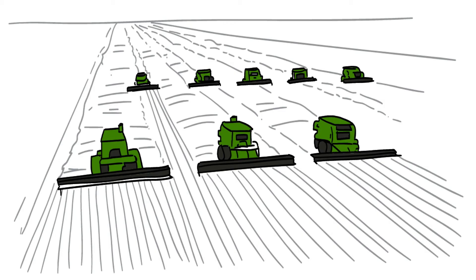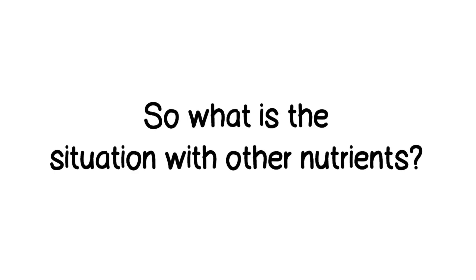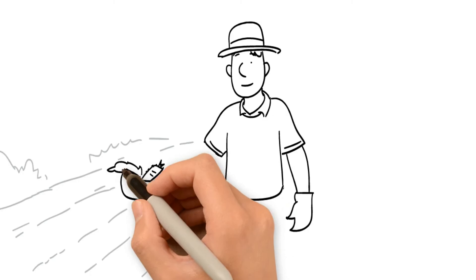So what is the situation with other nutrients? In addition to the primary nutrients PKN, plants also need other nutrients. Farming land can also cause a deficiency in these other nutrients as crop is harvested.